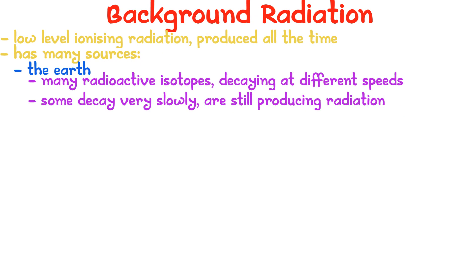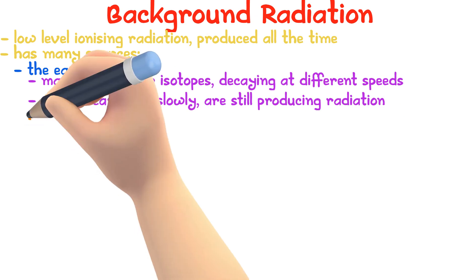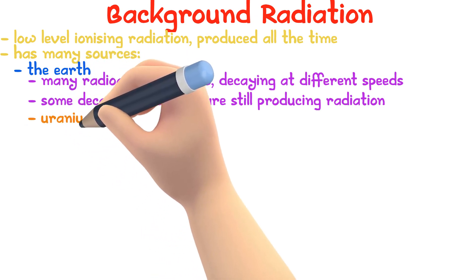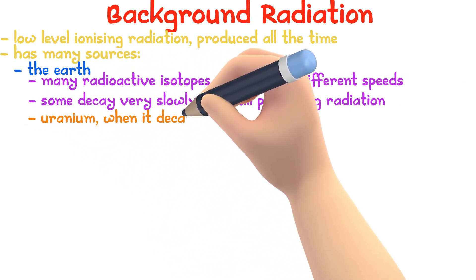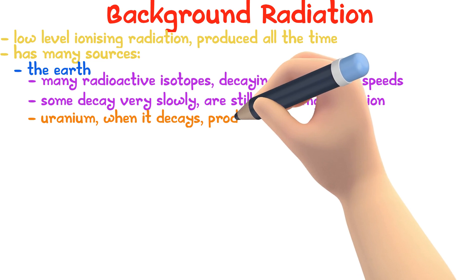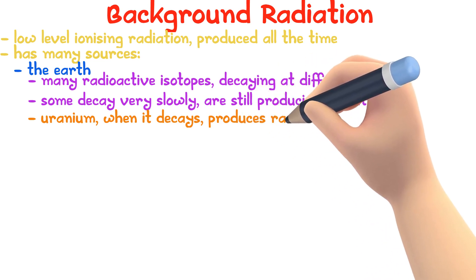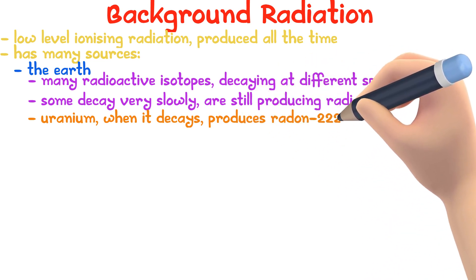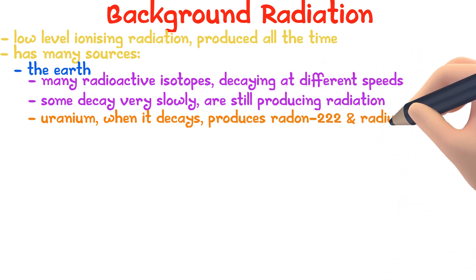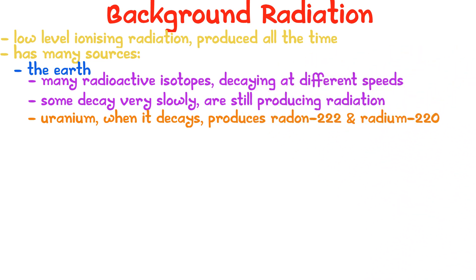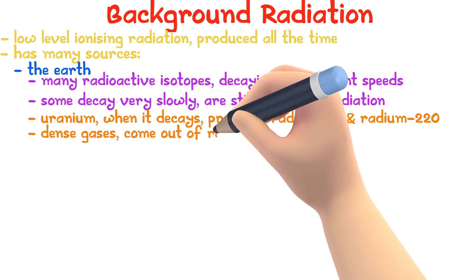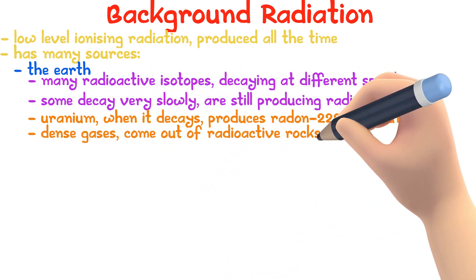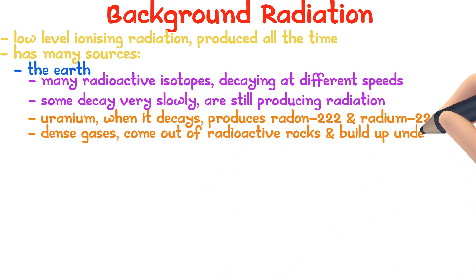One example would be the uranium isotope. When it decays, it produces radioactive gases radon-222 and radium-220. Since these are dense gases, they come out of radioactive rocks and build up under buildings.